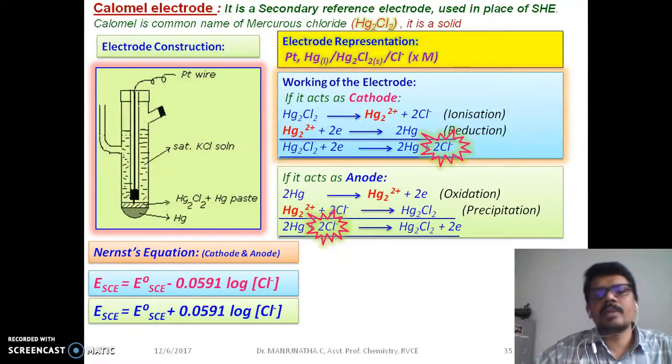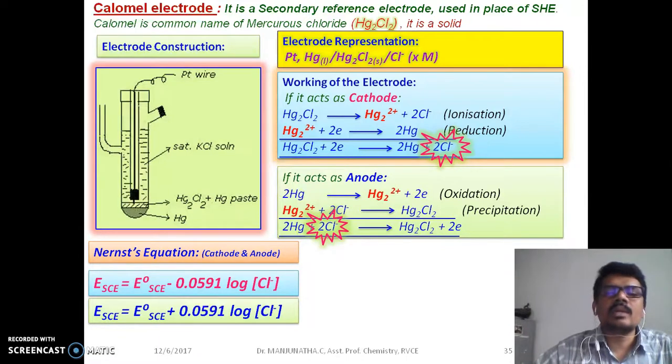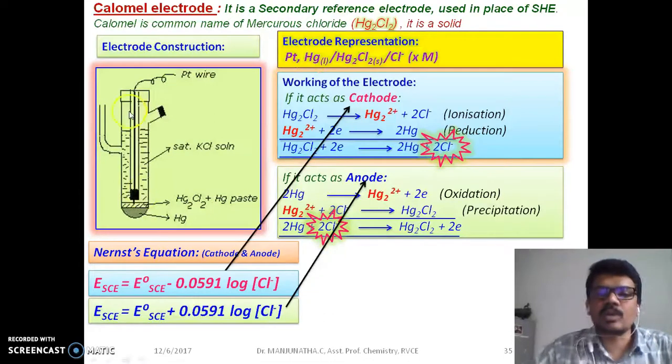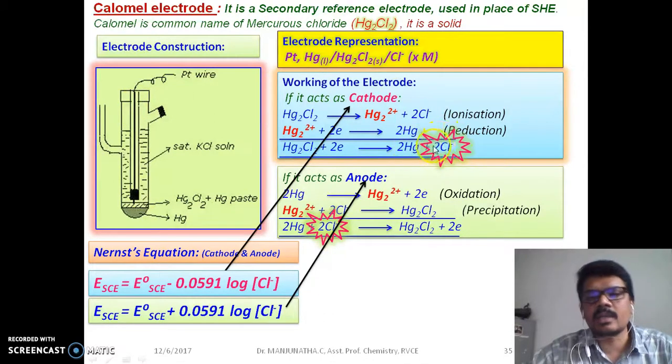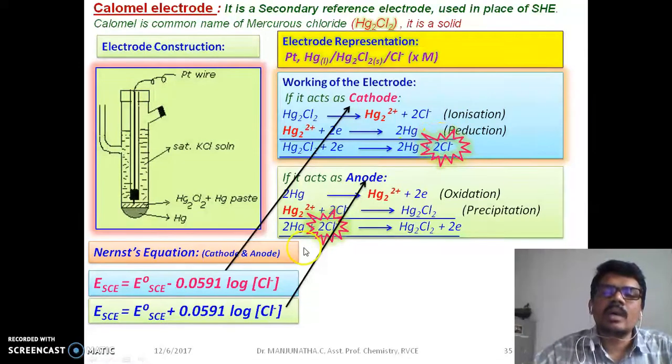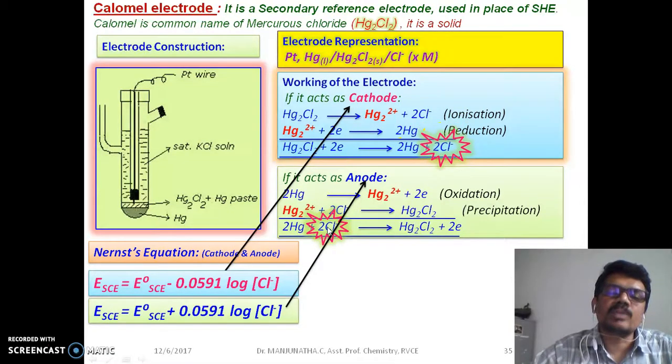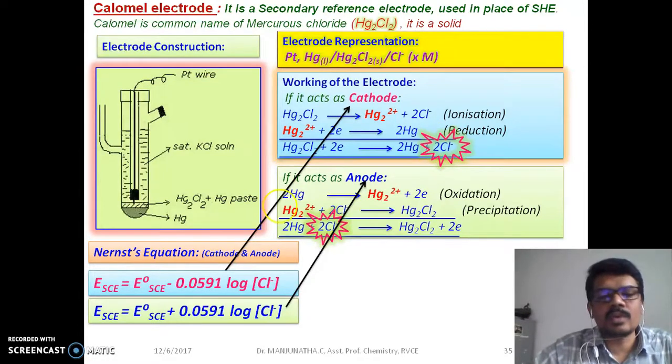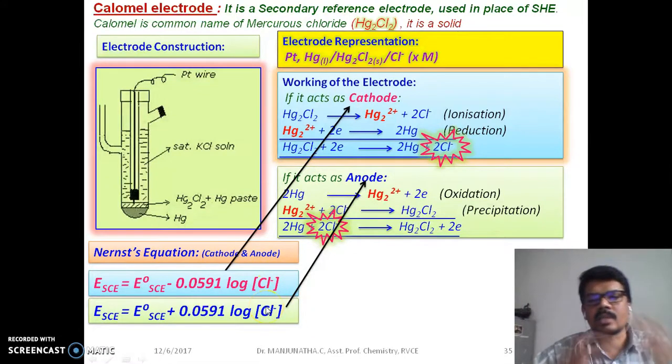When it behaves as anode and cathode, the one common ion which is involved in both the reaction is Cl-. Hence, this Nernst equation is reversible with respect to chloride ion. You can see this is highlighted. Chloride ion is released when it behaves as cathode and chloride ions are consumed when it behaves as anode. Therefore, this Nernst equation electrode potential depends on the concentration of Cl-, because that is involved in both oxidation and reduction.